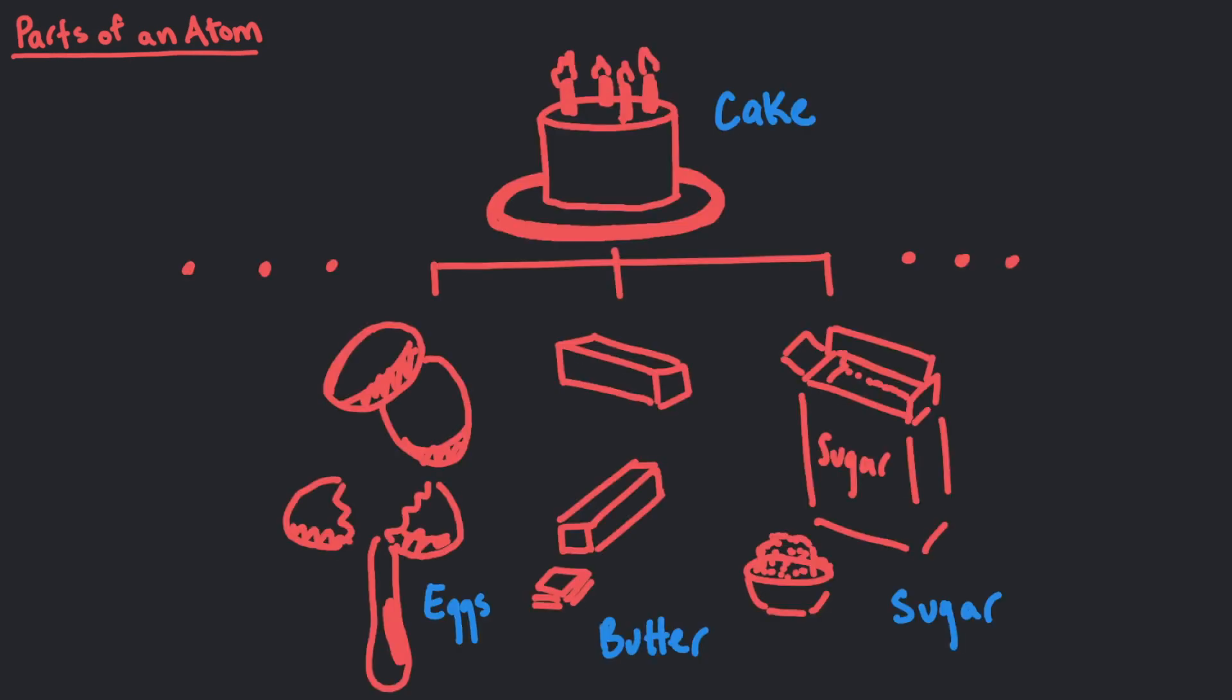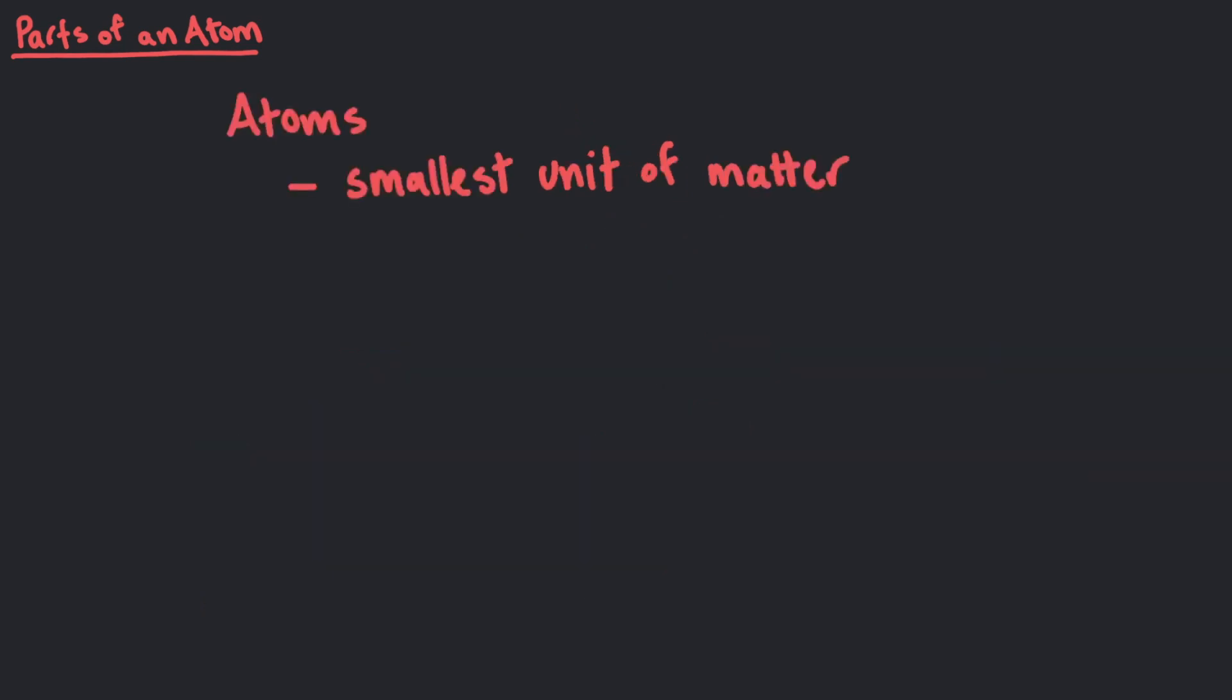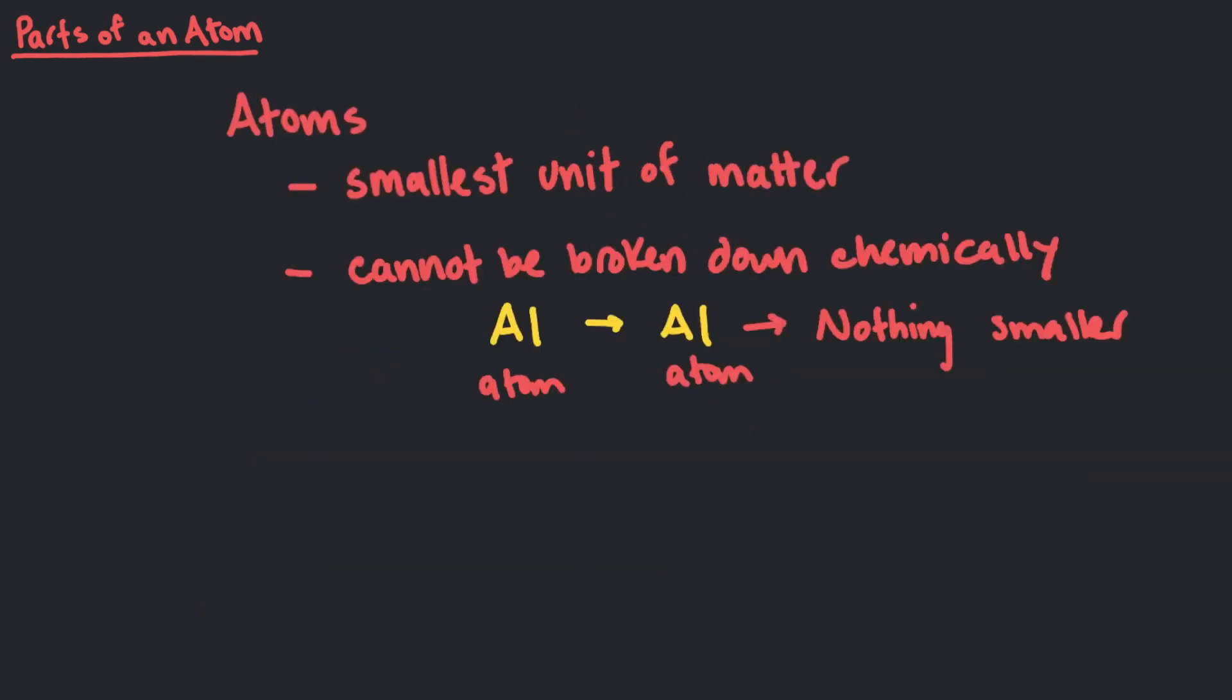Similar to how a cake is made with different ingredients, matter is made with different types of atoms. Atoms are the smallest unit of matter that cannot be broken down chemically. They are very small and definitely can't be seen by the naked eye.